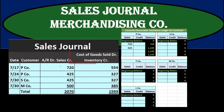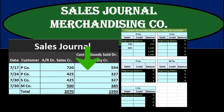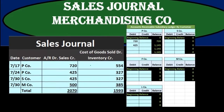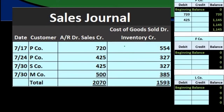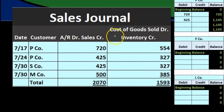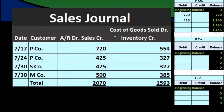If we sell inventory, we could have another column here. On every transaction this will record the second component of the sales-type transaction: when we sell inventory, that being the decrease in inventory — a credit to inventory — and the related expense of selling that inventory to help generate revenue, that going to cost of goods sold.